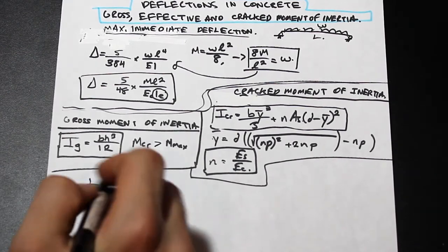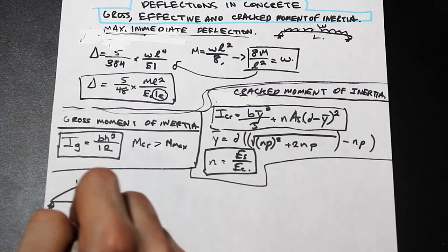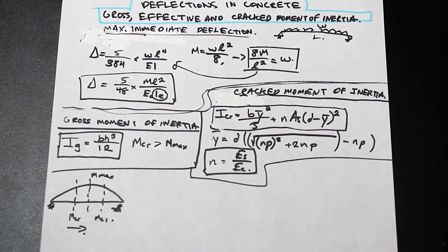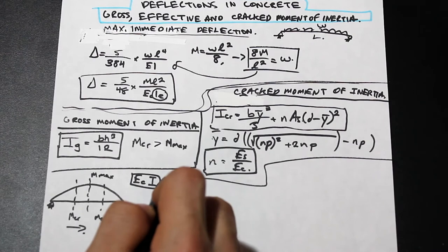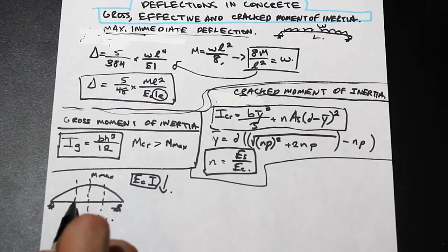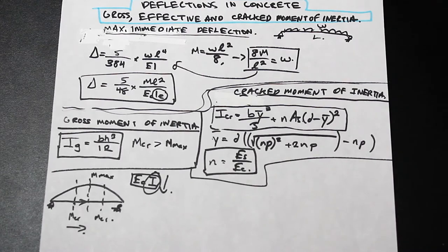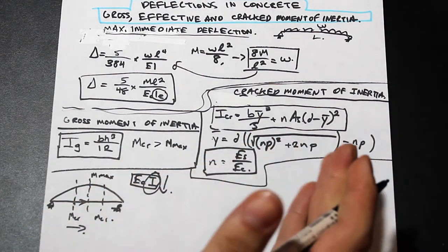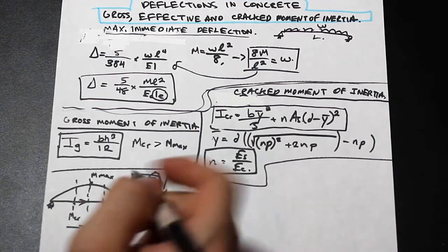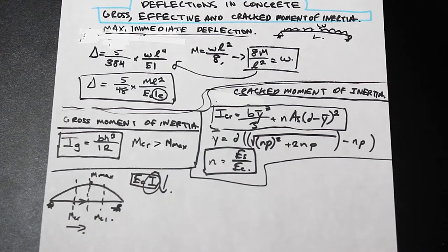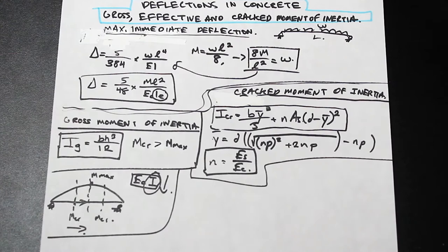Consider the fully cracked moment Mmax and Mcr. As we go toward mid-span, the flexural rigidity EcI decreases. In a cracked section, I is actually a variable — it's decreasing while the modulus of elasticity stays the same. When calculating deflections, we can't use a variable I, so we need to derive a formula that makes these calculations manageable. That's what the effective moment of inertia provides.